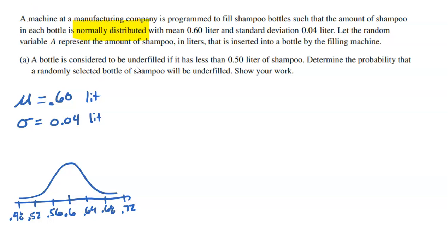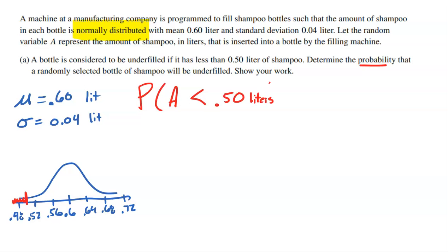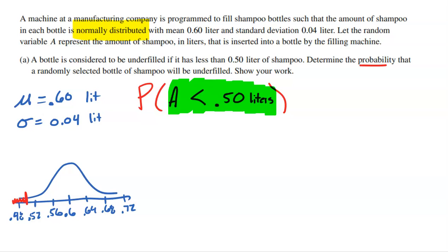Question A says a bottle is considered underfilled if it has less than 0.5 liters of shampoo. Anything below 0.5 is considered an underfilled bottle the company would want to discard, because a customer getting an underfilled bottle might be upset. We want to find the probability that a randomly selected bottle is underfilled — that is, P(A < 0.50 liters).